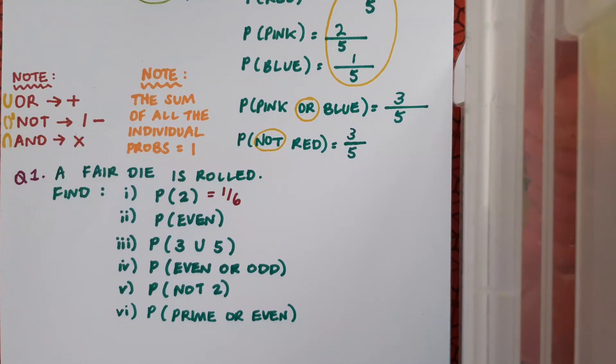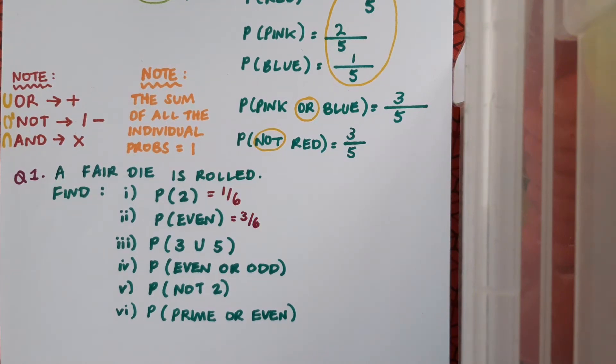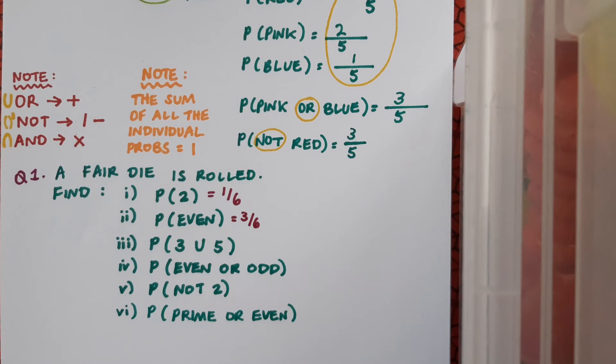There are three even numbers on a die and there are six in total, so the probability of rolling an even number is three over six. You can if you want cancel this down to a half, but sometimes it's advantageous to leave it alone and not cancel down just for ease of adding and subtracting fractions.